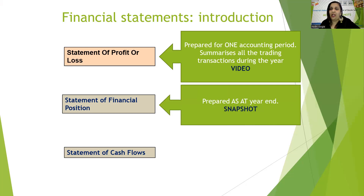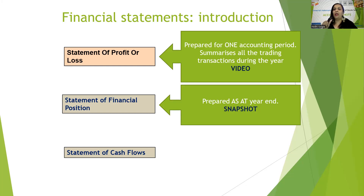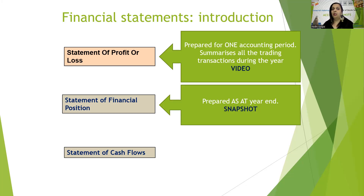The statement of financial position, or balance sheet, is prepared as at the end of the year — on 31st December, 31st March, or 30th June, depending on your year end. It's like a snapshot: when you take a photo, you capture that one particular moment. So the statement of financial position is at a particular date. While the statement of profit and loss covers the whole accounting period and shows the performance of the business, the statement of financial position shows the position of the business as at a particular date.